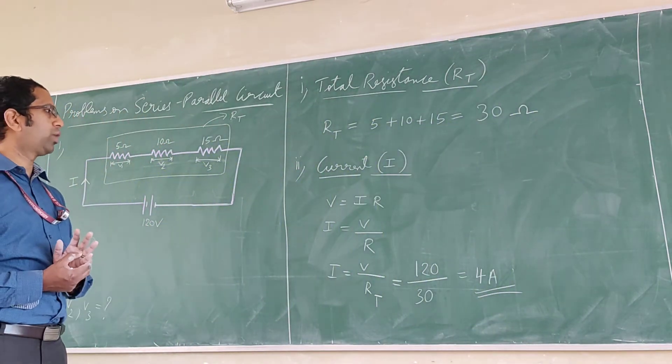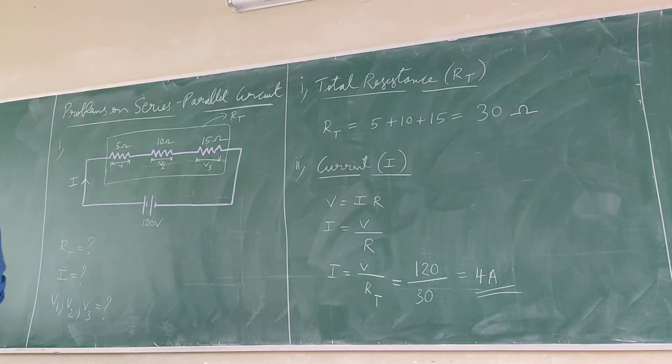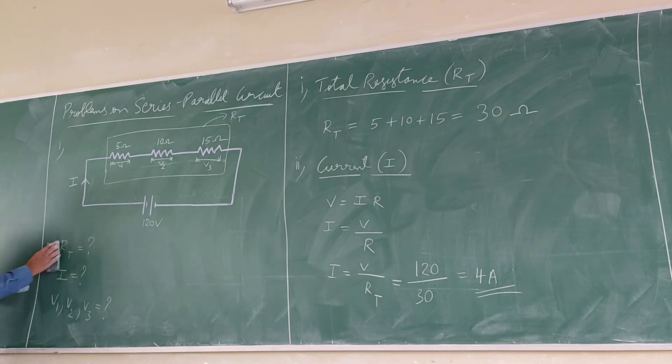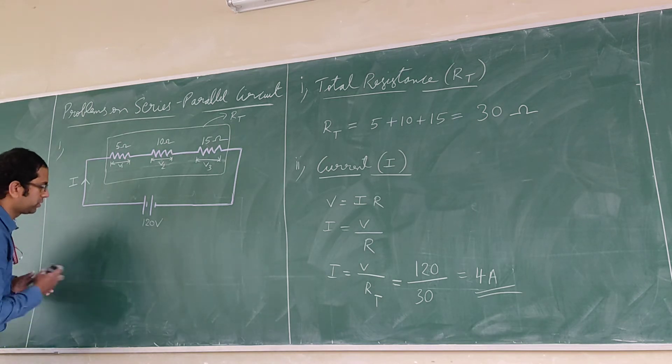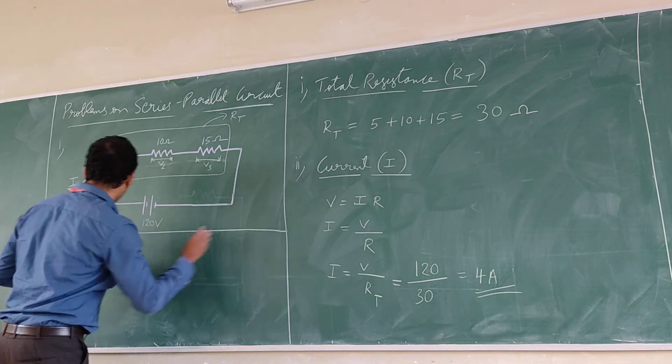So this is what you get for the current. You got the total value of the resistance. Now you will be finding out the individual voltages.